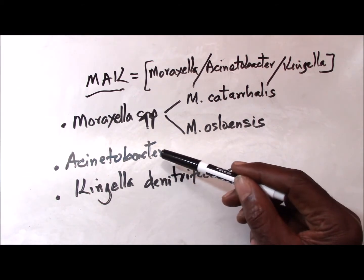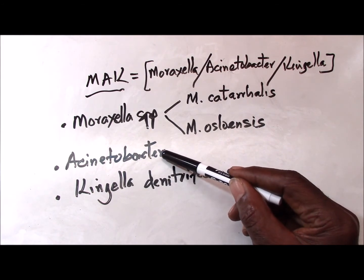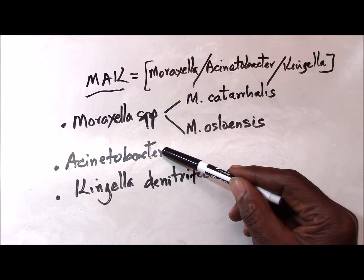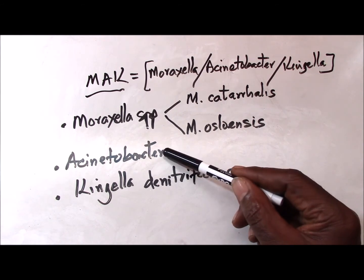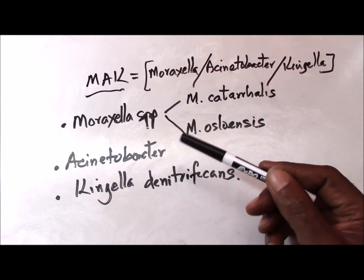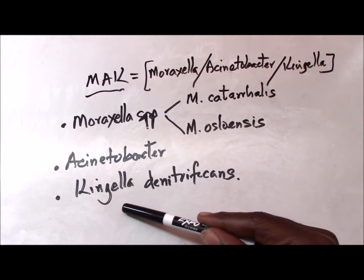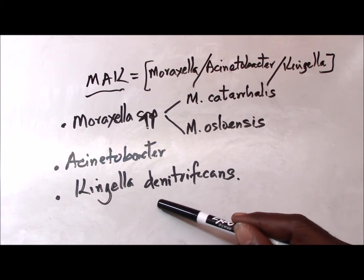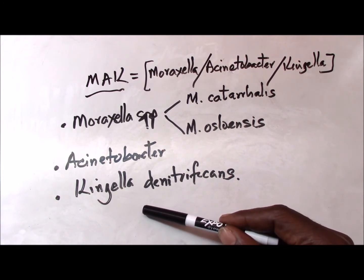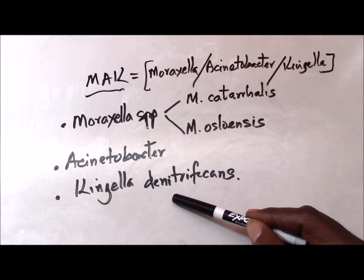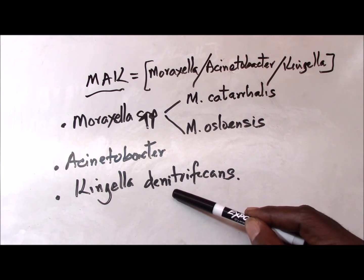Moving on to Acinetobacter — these are generally opportunistic organisms and common colonizers of hospitalized patients, and therefore may be mistaken for Neisseria species because they are also coccobacillary in shape. Finally, you have Kingella. Kingella denitrificans is a member of the HACEK group, which was presented in an earlier video. It is also an opportunistic pathogen and actually has a low virulence.